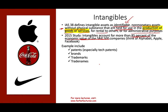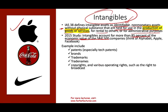Brands, trademarks, trade names — the Coca-Cola sign, Nike, Apple, Microsoft. As soon as you see those trademarks and trade names, you would recognize them. Companies invest billions of dollars to make sure their product is known, and this is part of their intangible. Copyrights and various operating rights, such as the right to broadcast, franchise, or licenses — if you want to start a McDonald's, you have to pay a franchise fee. That's an intangible; you pay for the right to use the name.